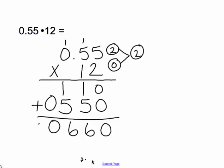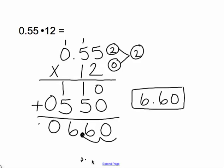So in our product, we go over 1, 2, and your decimal point is in two places over. So your final answer is 6 and 60 hundredths. And that's how you multiply decimals.